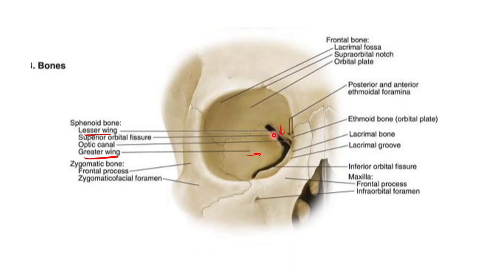The superior orbital fissure is bounded laterally and below by the greater wing of the sphenoid bone. It is bounded above by the lesser wing of the sphenoid in the deeper part. This bony fissure is present between the lesser wing of the sphenoid above and the greater wing of the sphenoid below, and medially limited by the body of the sphenoid.